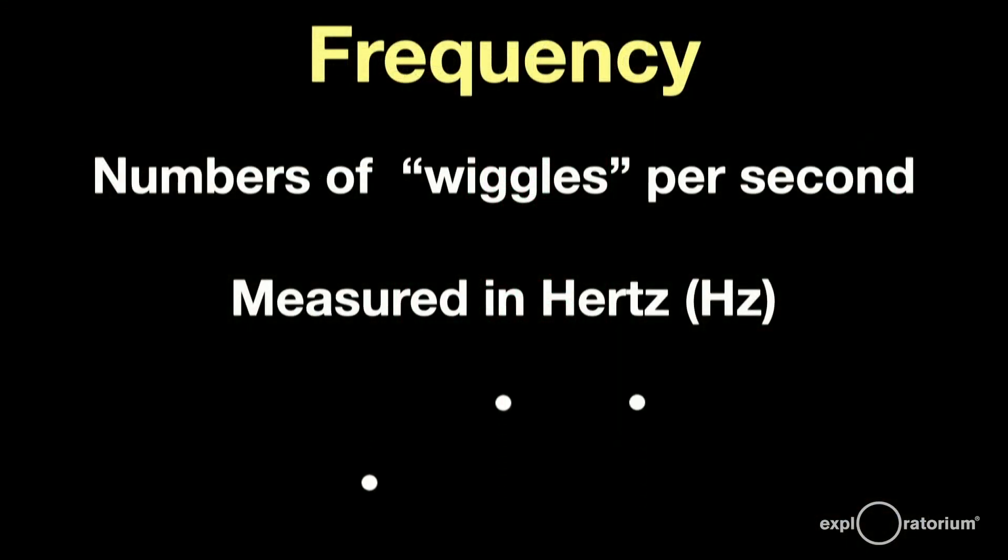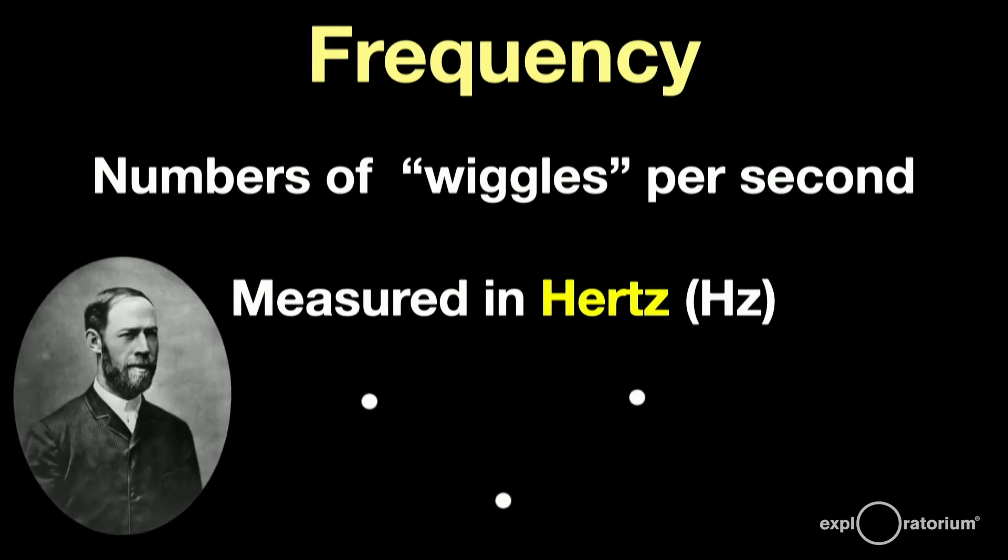Another jargon word we need to understand is frequency. The frequency is simply the number of wiggles per second that something is vibrating. The unit of frequency is the Hertz, abbreviated Hz, after Heinrich Hertz, who discovered radio waves. If something is vibrating at 10 Hertz, it's vibrating 10 times per second.